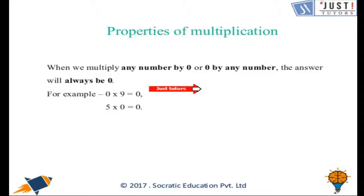One more really important property of multiplication. That if we multiply any number by 0 or 0 by any number, in both the cases we will get the answer as 0. Let's take an example. 0 multiplied by 9 will be 0. Basically it is same as adding 0 to itself 9 times. As you know that we will get 0.